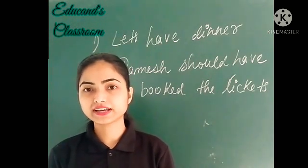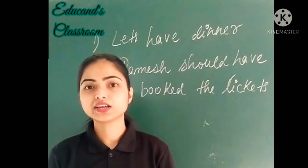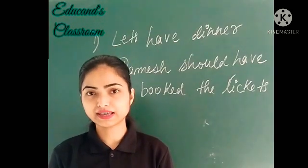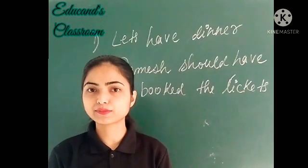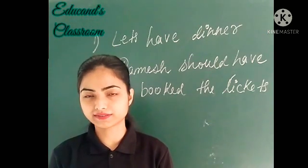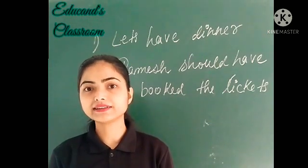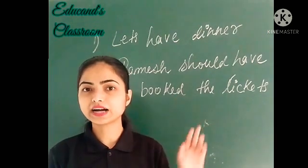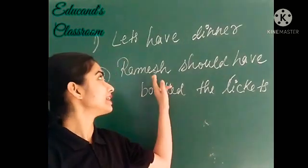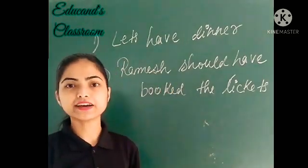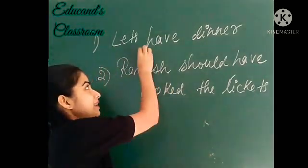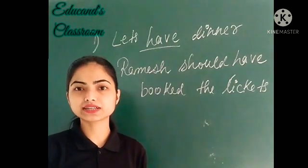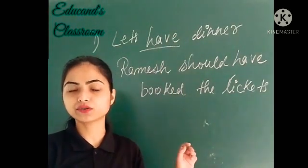Toh ye word kaunse hai? Jiasse be, do, have, has — yeh saab words hum use kar saktay hai action verb or auxiliary verb douno thara se. Lekin, ye context mein difference hooga. For example, yaha peh humne ek example liya: 'Let's have dinner.' Yaha peh 'have' matlab kya hai? Ki hum khane ja rahe hai dinner. Toh hum jho activity kar raha hai woh hai khana. Toh yaha peh 'have' kya hooga?